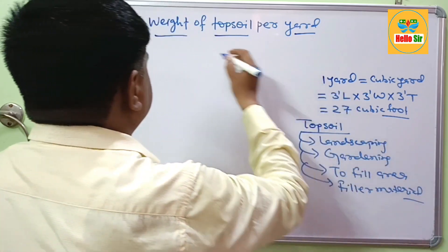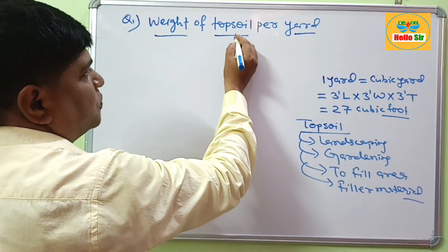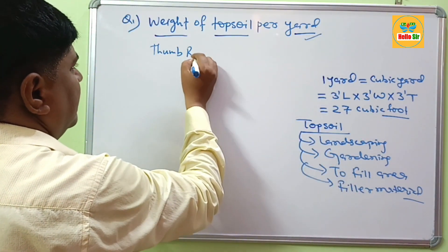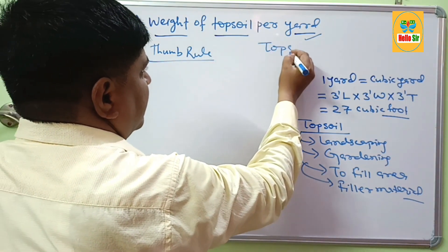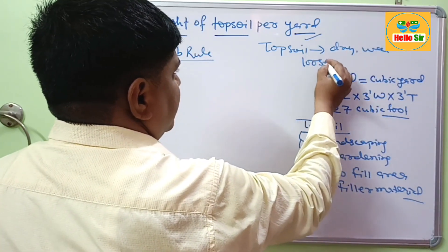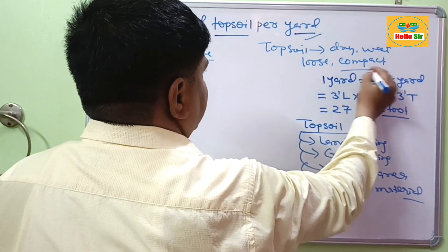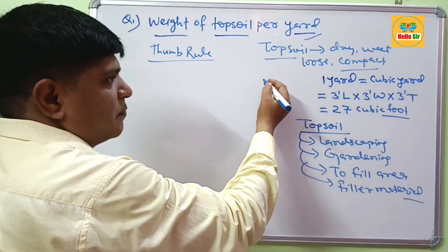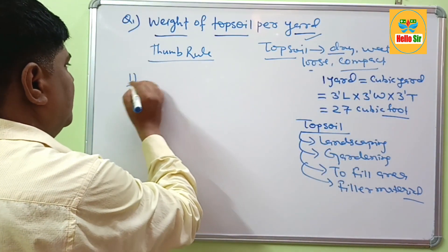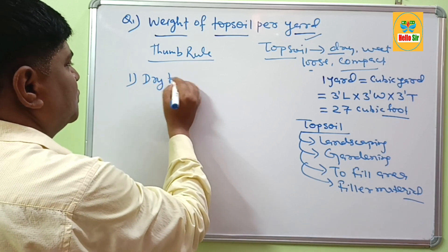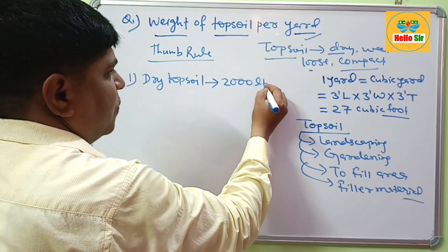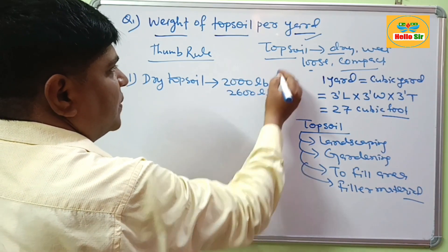What is the weight of topsoil per yard according to thumb rule? Your topsoil may be in dry, wet, loose, or compact condition, meaning the density of topsoil can vary. But according to thumb rule, dry topsoil weighs about 2000 pounds to 2600 pounds per yard.